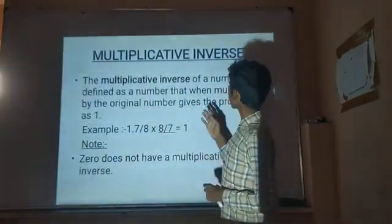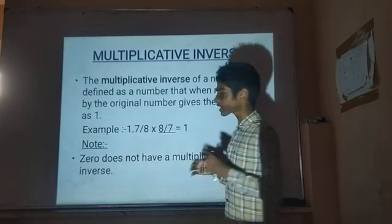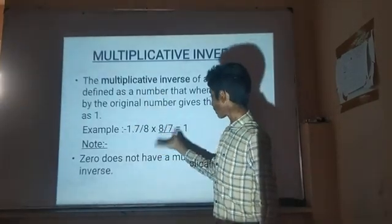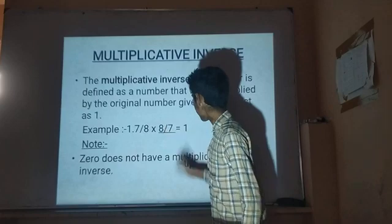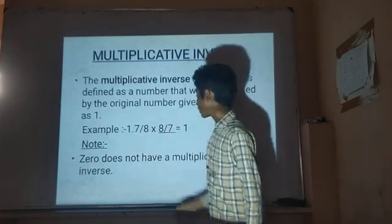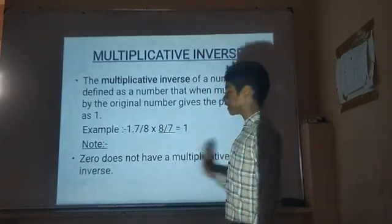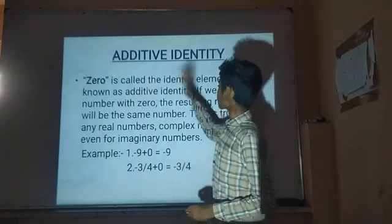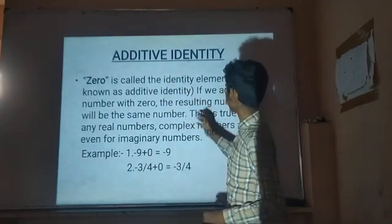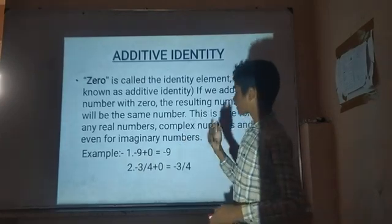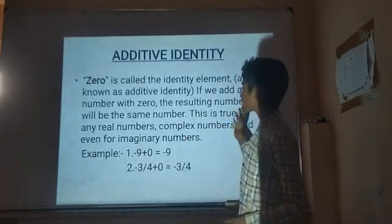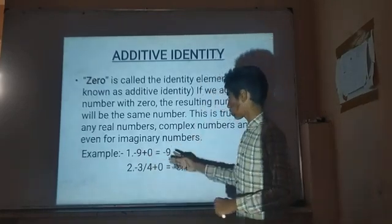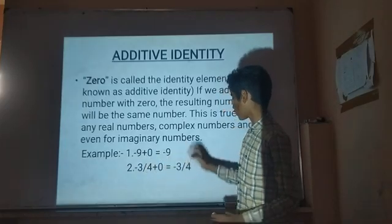Multiplicative Inverse: the multiplicative inverse of a number is defined as the number that when multiplied by the original number gives the product as 1. For example, 5 by 8 when reciprocated and multiplied by 8 by 5 gives the result as 1. Note: 0 does not have any multiplicative inverse. Additive Identity: 0 is the additive identity element — if we add any number with 0, the result is the same number. For example, minus 9 plus 0 is equal to minus 9, and minus 3 by 4 plus 0 is equal to minus 3 by 4.